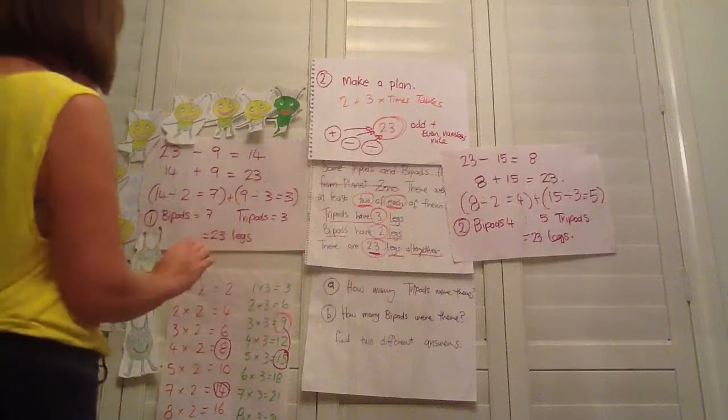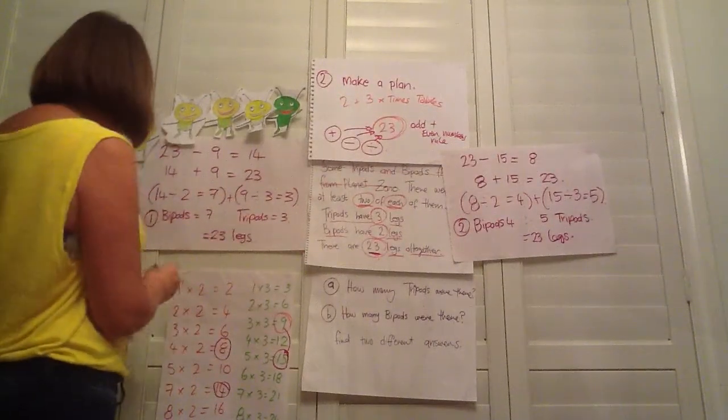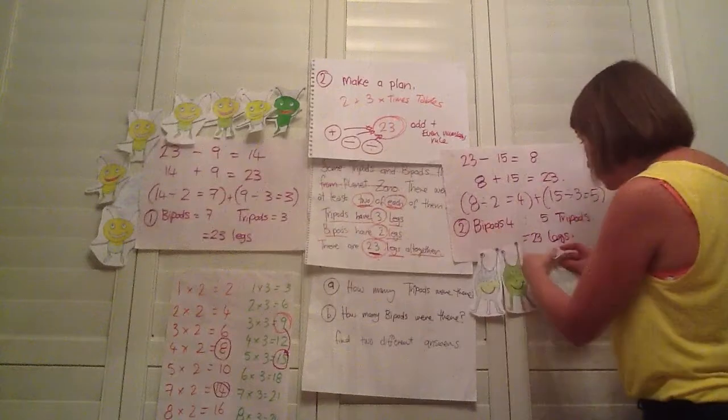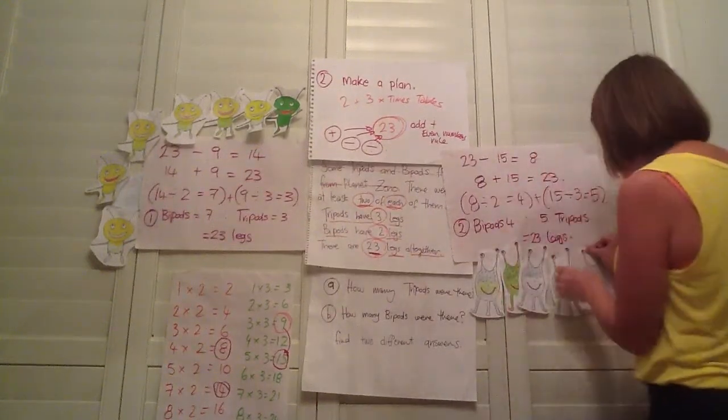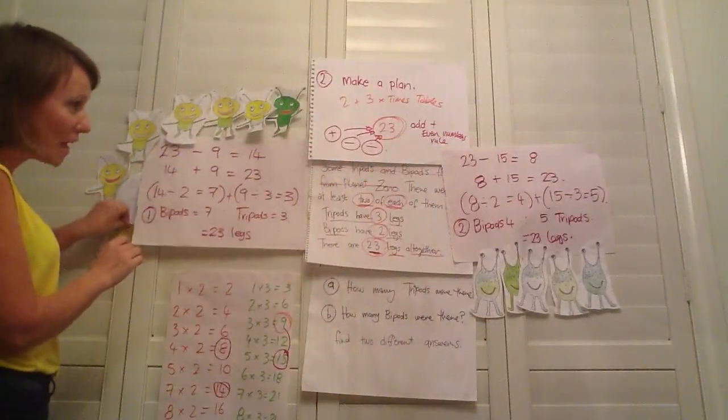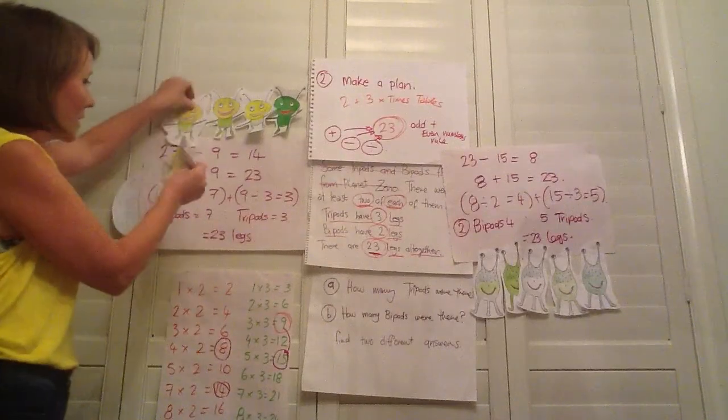And we'll just double check with our little pictures here, with our illustrations. So we've got five tripods. Okay. So I'll just chuck these guys here. One, two, three, four, five. And we'll double check by counting the legs in a second. And we have four bipods. One, two, three, four.